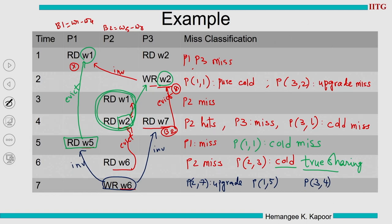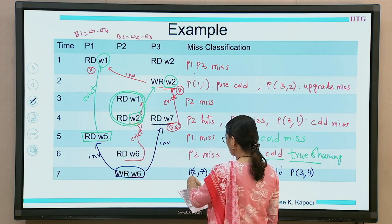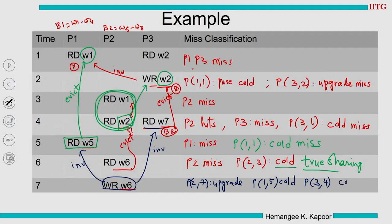For P1 at row 5: we loaded the block and W5 was not changed by anybody — this is a cold miss. For P3 at row 4 (P3,4): we were reading W7, and nobody else changed W7. So this is also a cold miss — a pure cold miss — because it had to happen and is not related to coherence.